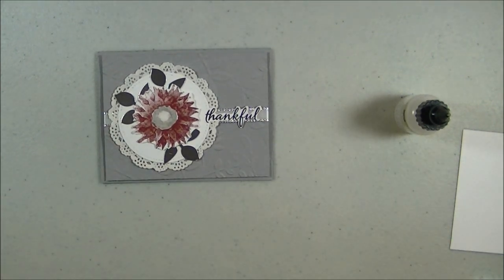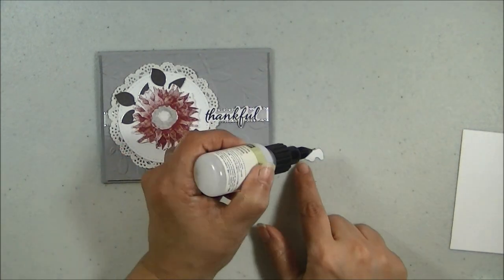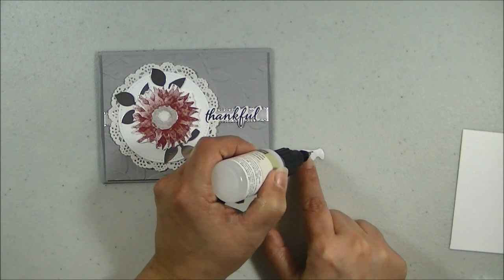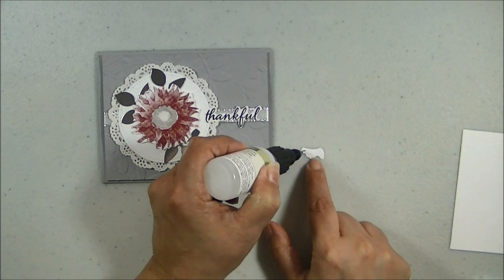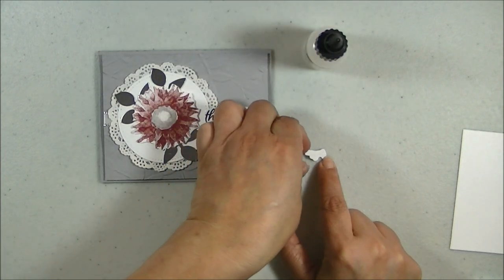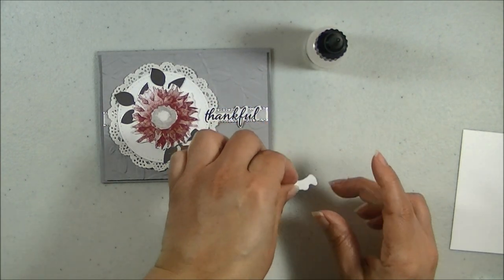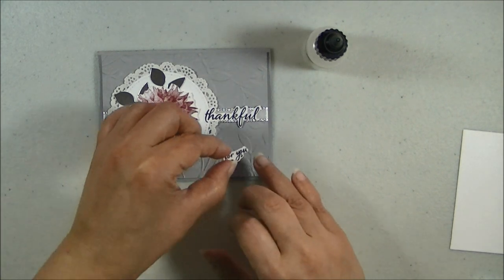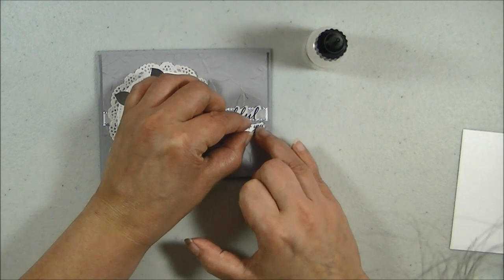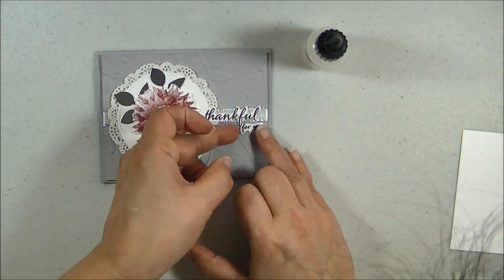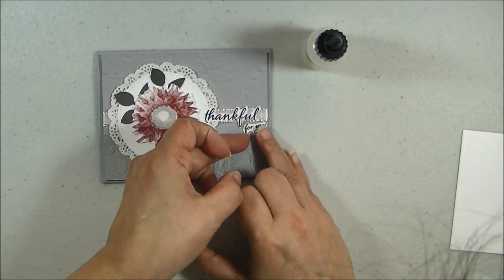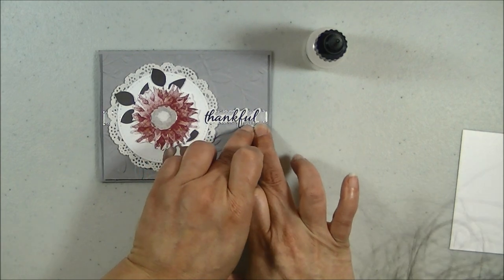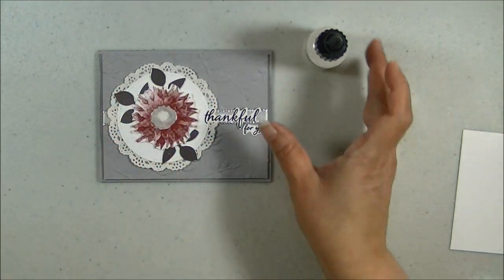And then I am going to do the same with the glue for the for you. That was a lot of glue. Let's spread it around. Just some little dots. Pick it up. Flip it around. And we are going to put that down right under the ribbon a little bit. And there you go.